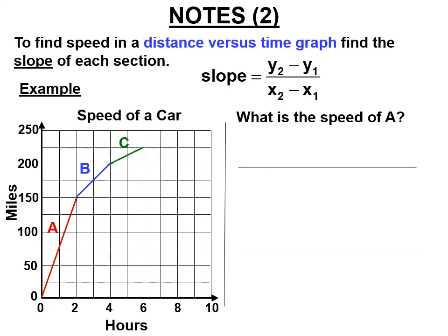To find the speed in each section, you find the slope. So in section A, there are good intersections to use — I recommend you do the whole section every time, and you'll see later in the lesson why that's the safe way to go. During section A, we went 150 miles and it took two hours, so 150 divided by two is 75. We're going 75 miles per hour during section A.